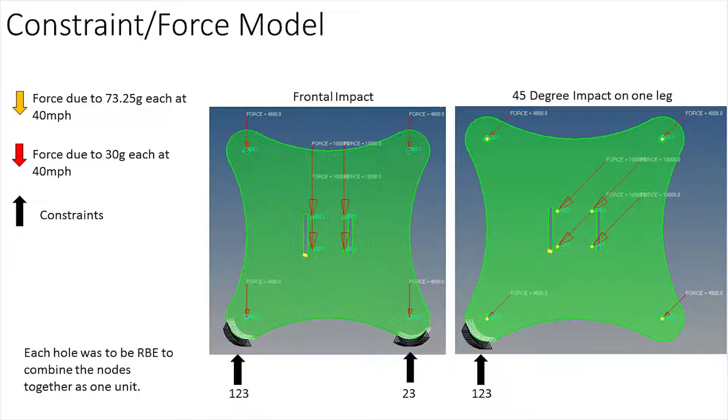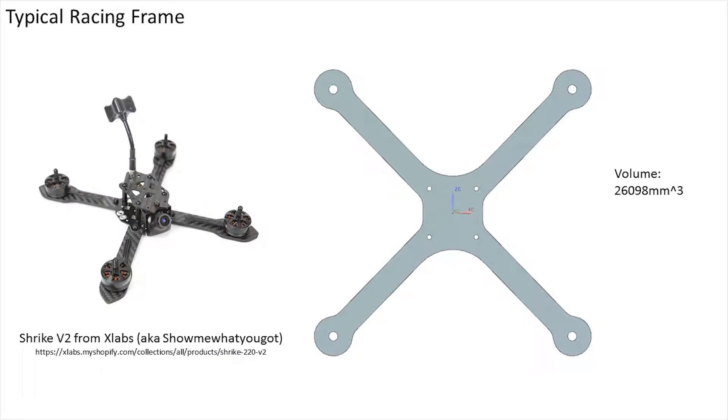I ran it in two scenarios where one was a frontal impact and one was a 45 degree impact where it only impacted one of the legs. For comparative purposes I also ran this test against a typical racing frame. This is very similar as you can see on the screen to a Shrek V2 from Show Me What You Got.